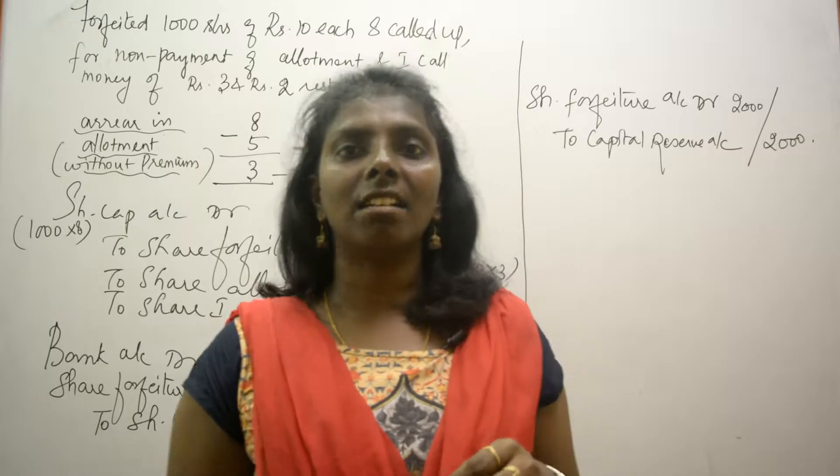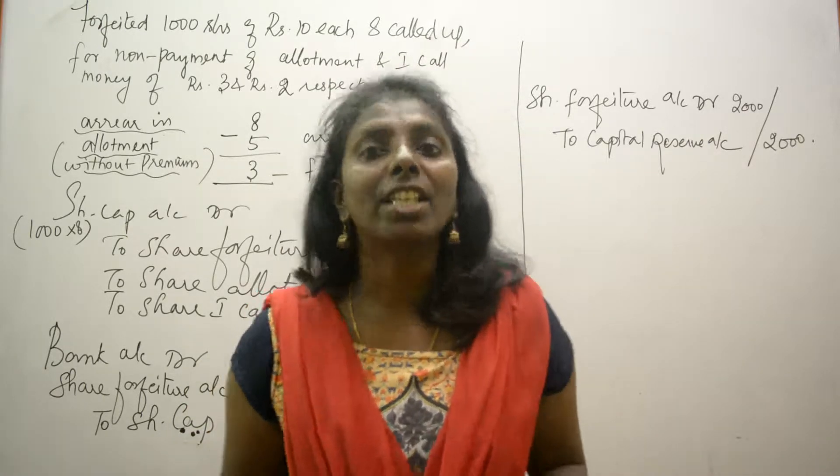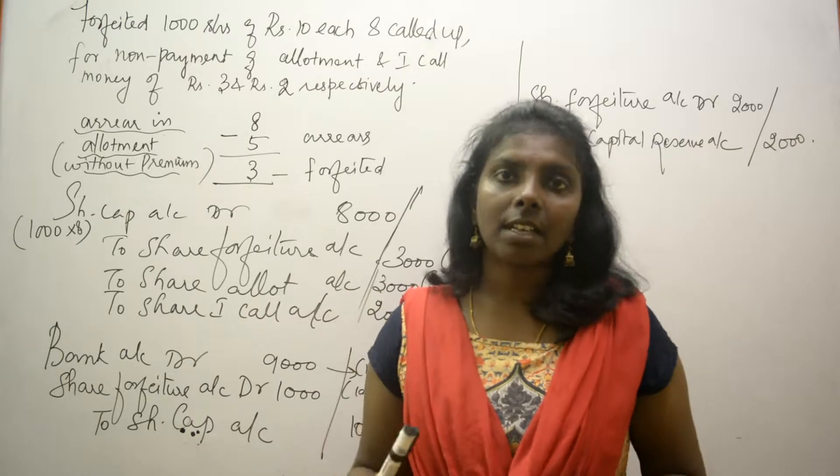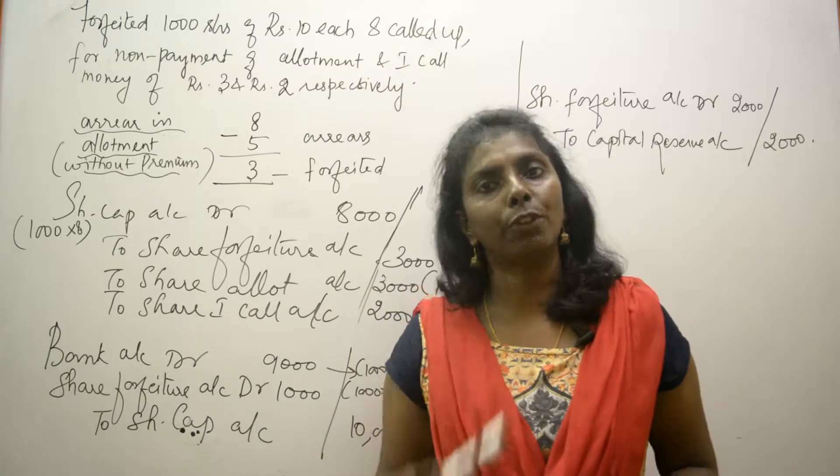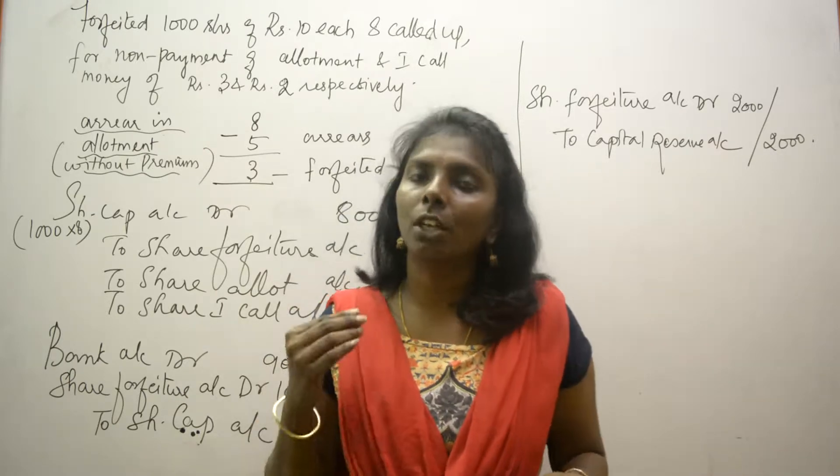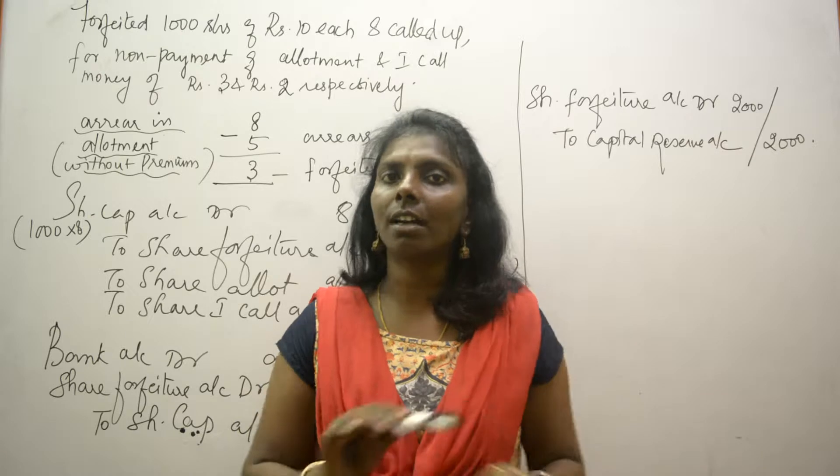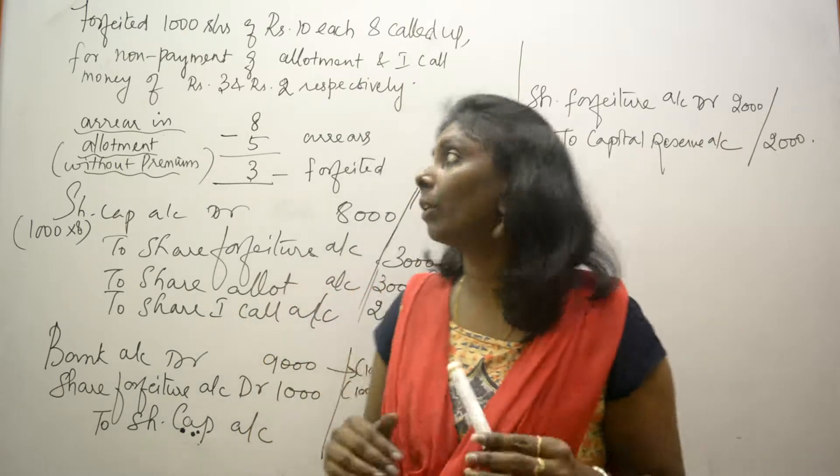Hi guys, we're going to see share forfeiture and reissue in a case where arrears are there in allotment as well as first call. Allotment does not have premium, because if allotment has a premium there's a slight change. This scenario does not have premium in allotment, but we're going to see how forfeiture and reissue happens when we have arrears in both allotment and first call.